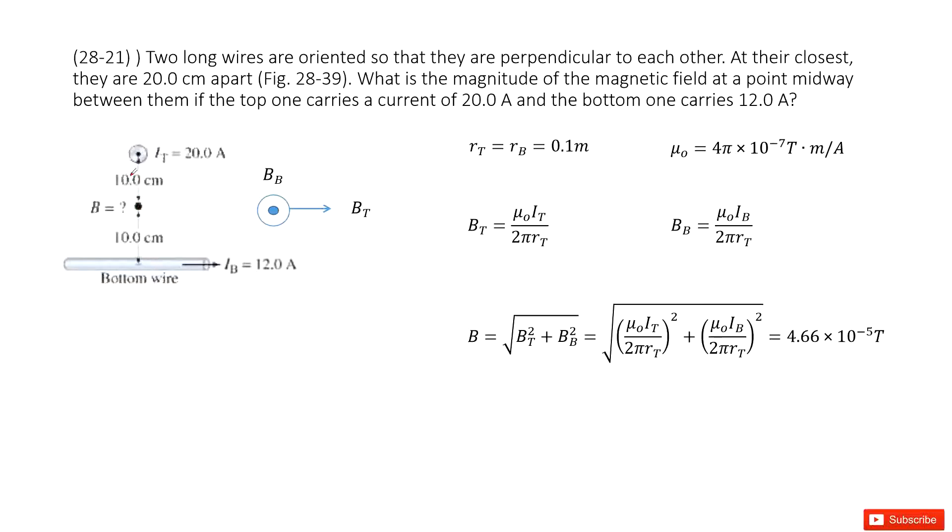So there we consider this top wire. And then we can use right-hand rules to find the magnetic field that at this point is just pointing to the right. So you can draw a circle around this wire. It's anti-clockwise. When we consider the middle point at just the bottom of this top wire, it's pointing to the right. So this is BT.